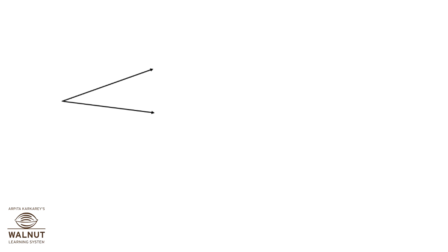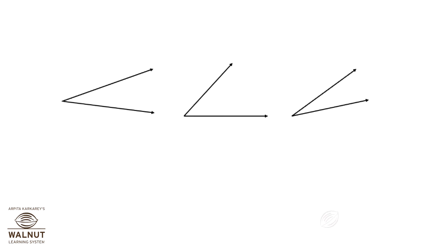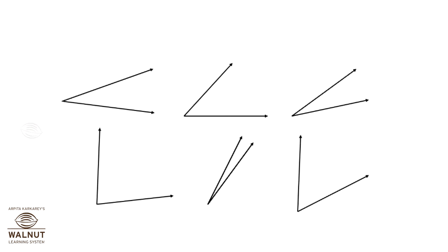Some angles are smaller than right angles. They look like this. These angles have a special name — they are called acute angles. All these are acute angles.